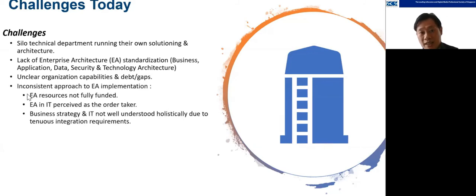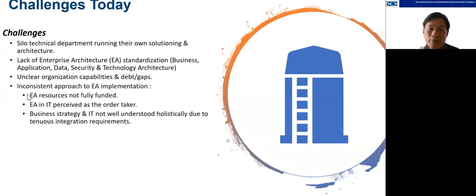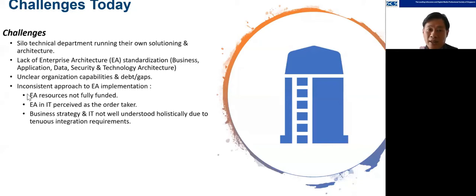Lastly, the challenge of inconsistent approach to EA implementation — and I'm talking about enterprise architecture implementation, not any technical implementation. In many companies, EA is not funded and is perceived as an order taker rather than a strategic function. Business strategy and IT are not aligned: business strategy goes in one direction and IT goes in a different direction because they are not aligned, due to differing integration requirements.